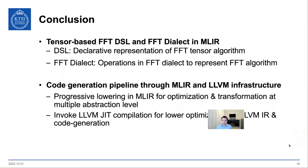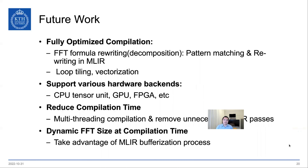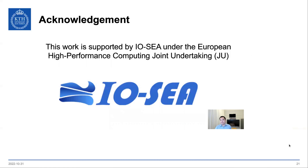The conclusion is that we designed a tensor-based FFT DSL and the FFT dialect in MLIR, and we worked out a code generation pipeline through the MLIR and LLVM infrastructure. The future work would be: first, focused on optimization — we want to add more optimization passes like loop tiling and vectorization. Also, we want to support various hardware backends, reduce the compilation time, and support dynamic FFT size at compilation time. Thanks.